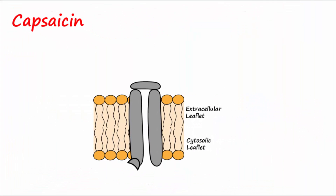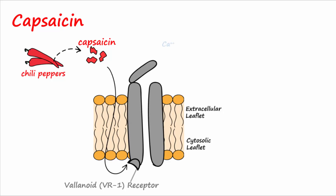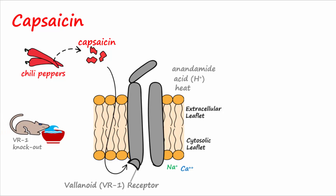The substance in peppers that gives them their spiciness is known as capsaicin. Capsaicin activates ligand-gated calcium and sodium channels by binding to vanilloid receptors, or VR1 receptors. Heat and acid will also open these same channels, as does the endogenous compound anandamide. Interestingly, mice who have had their VR1 receptors knocked out are able to drink capsaicin solutions as if it were pure water.